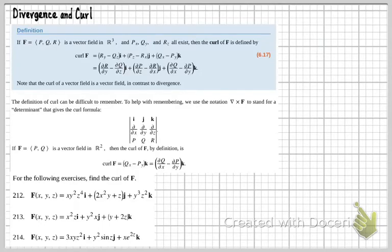Definition of curl. If f equals pqr is a vector field in R³ and px, qy, and rz all exist, then the curl of f is defined by curl f equals ry, meaning r partial of y, minus q partial of z, i, plus pz minus rx, j, plus qx minus py, k.